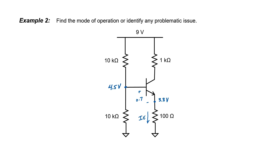Now let's find the emitter current. Using Ohm's law, I can take 3.8 divided by 100. That gives me 38 milliamps. Let's now go back and estimate my base current and check to see whether it was negligible or not. I'm going to assume again that beta is 100, so I can divide 38 by 100. Let's now find the current flowing down through this 10 kilo ohm resistor. Using Ohm's law, taking 4.5 volts divided by 10 kilo ohms, I find 0.45 milliamps.